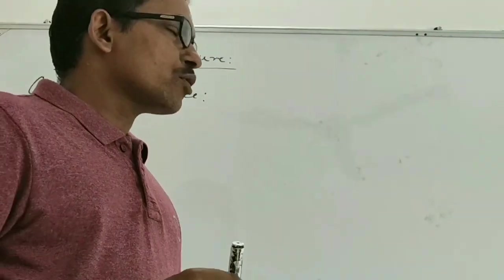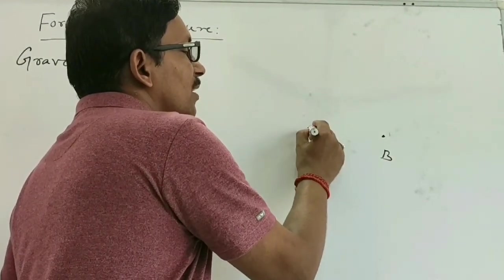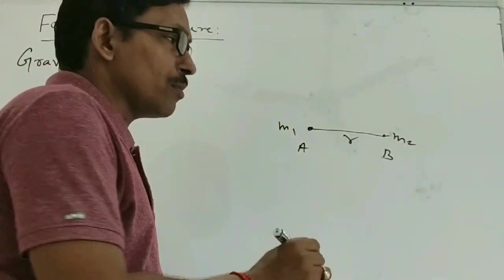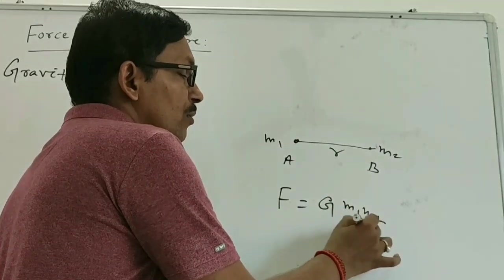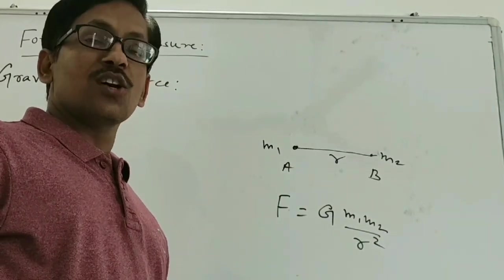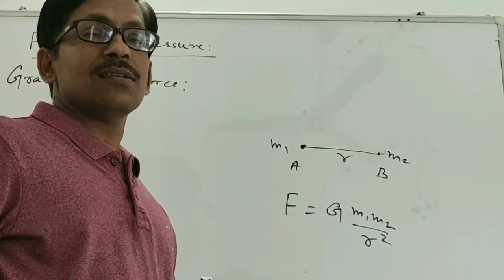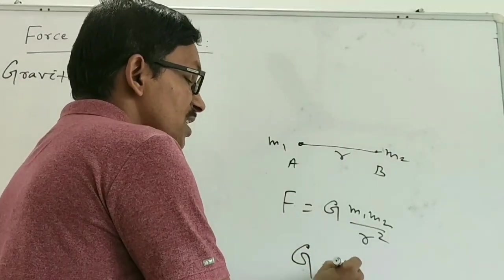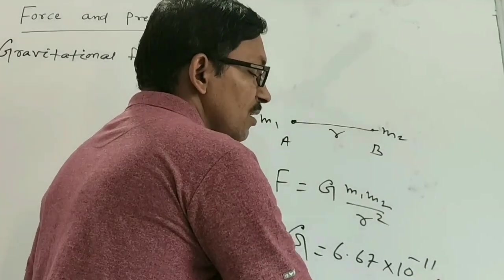Suppose two objects A and B are separated by distance R, with masses M1 and M2. The magnitude of the gravitational force between them is given by F = G·M1·M2 / R², where G is a constant called the universal gravitational constant. It is called universal because its value is the same for all bodies in the universe, and its value is G = 6.67 × 10⁻¹¹ N·m²·kg⁻².